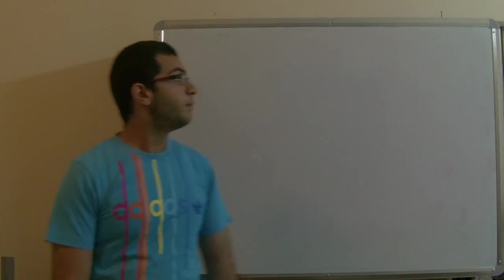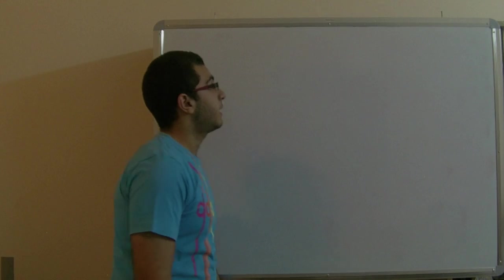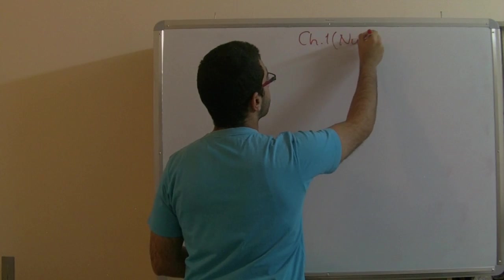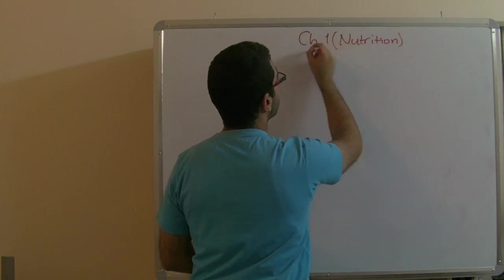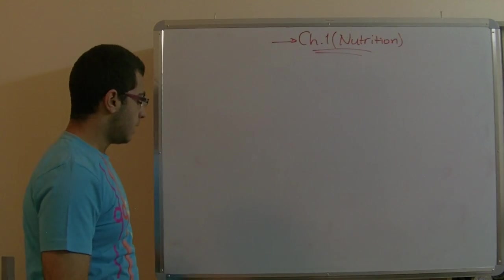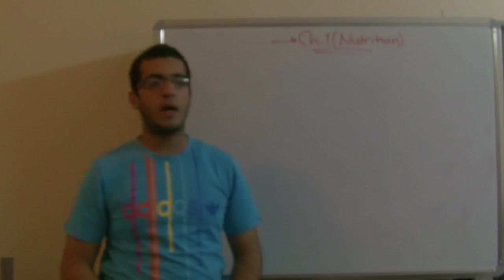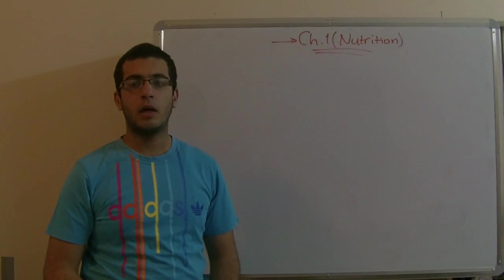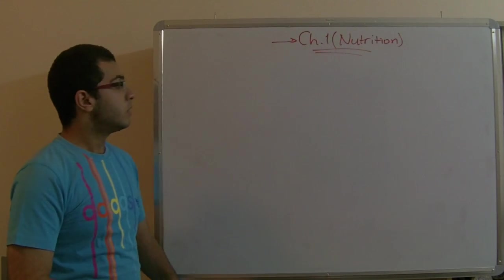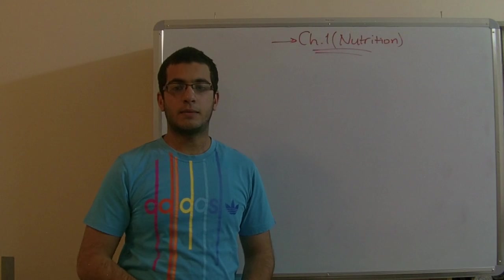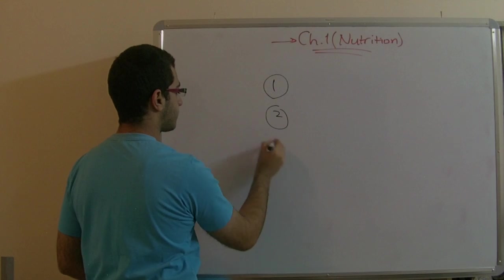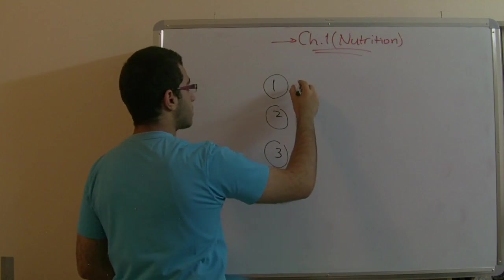Hello and welcome back. Today we are still in the first chapter of biology which talks about nutrition, and we are still in the nutrition of plants. Last time we talked about the water pathway through the root hair cells until they reach the xylem vessels. Today we will talk about the methods by which the plant absorbs salts, and here we have three methods.